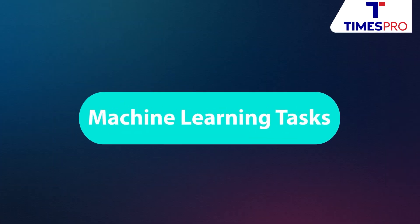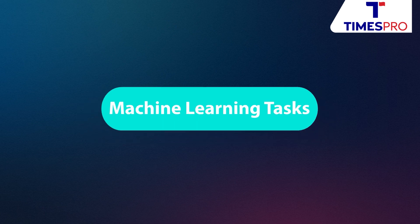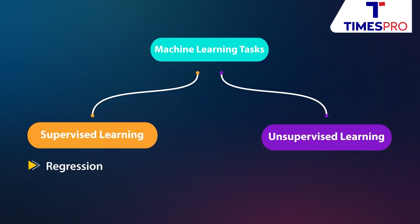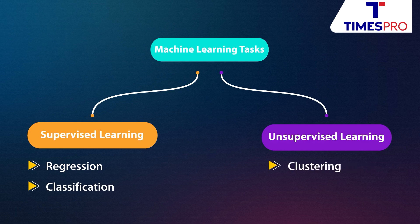Machine learning tasks can be broadly classified as supervised and unsupervised learning. Regression and classification are common machine learning tasks under supervised learning, while clustering and recommendation engines are common machine learning tasks under unsupervised learning.